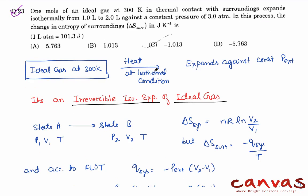Now coming to the next question 23. We have 1 mol of ideal gas at 300 Kelvin in thermal contact with the surroundings, and it expands isothermally from 1 liter to 2 liter against a constant pressure of 3 atm. So we have ideal gas here.